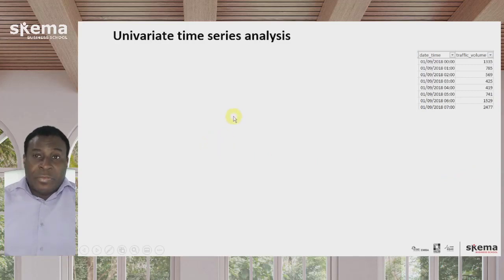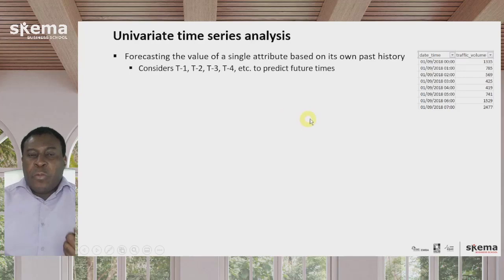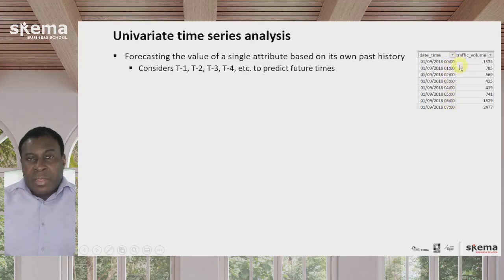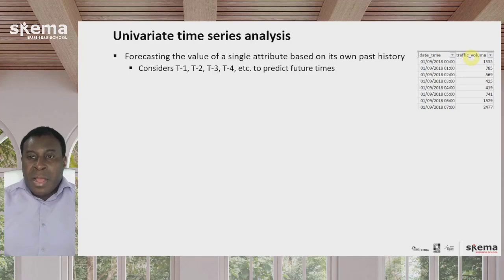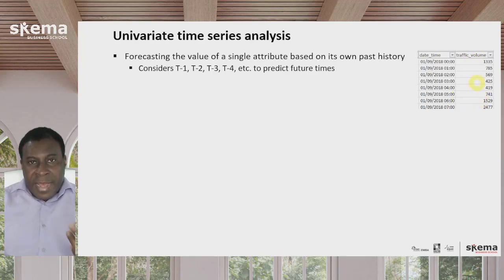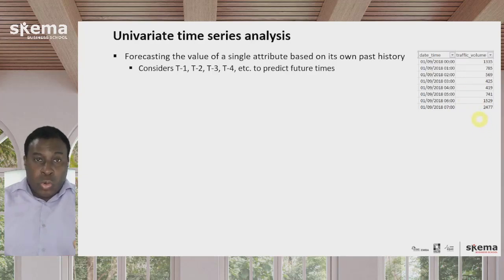Univariate means a single variable. This means forecasting the value of a single attribute based on its own past history. Here you have a simple time series, and the forecast variable or target variable is traffic volume — the amount of traffic on a highway at a certain point in time. Univariate time series analysis looks at the traffic at previous times to make a forecast of traffic in future times. It doesn't look at anything else — just the fact that traffic volumes were at previous times.